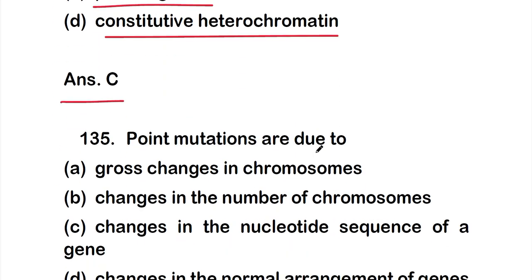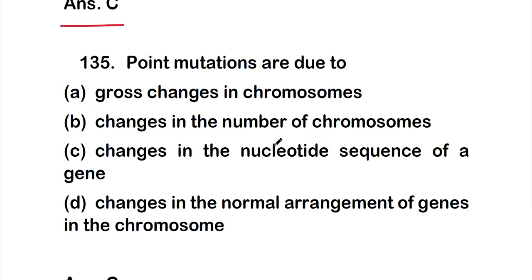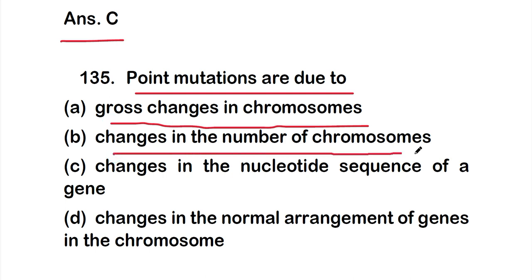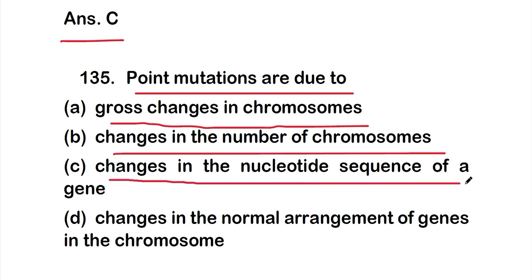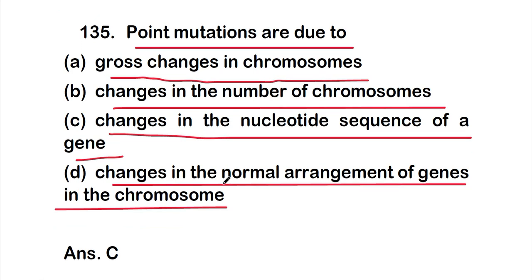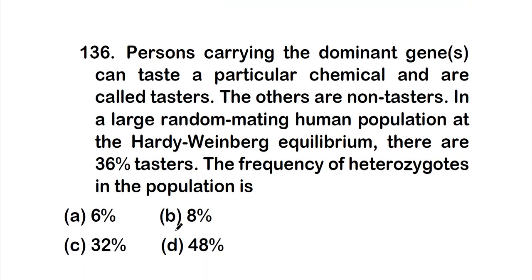Question 135: Point mutations are due to option A - gross changes in chromosomes, option B - changes in the number of chromosomes, option C - changes in the nucleotide sequence of a gene, or option D - changes in the normal arrangement of genes in the chromosome. The right answer is option C — changes in the nucleotide sequence of a gene.